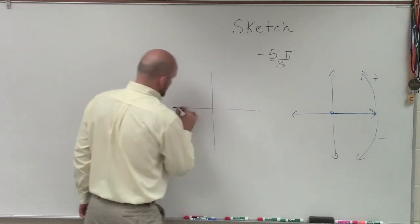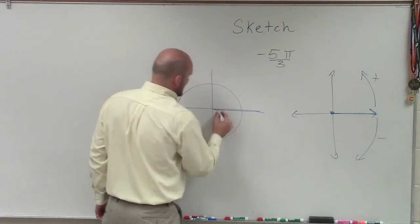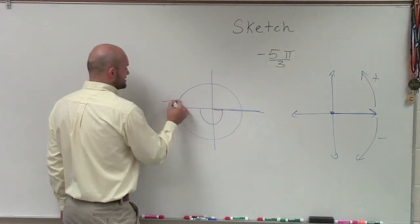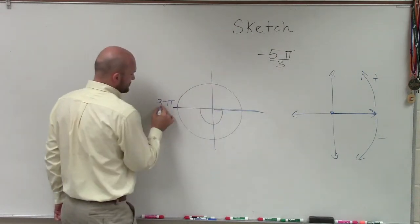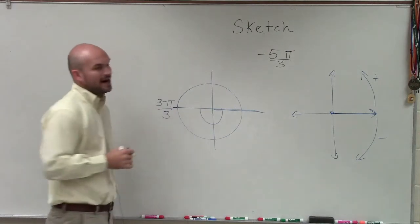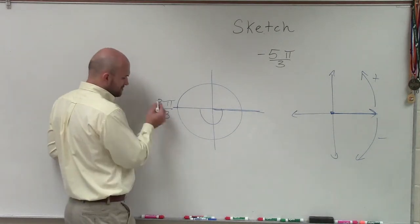When we're starting here and I rotate a ray halfway around a circle, that's going to be a measurement of π. But since I have a denominator of 3, I like to rewrite this as 3π over 3, because you think of fractions as parts of a whole.